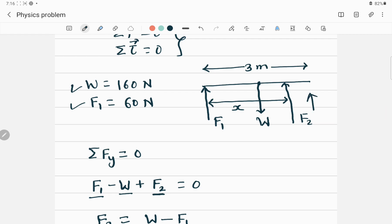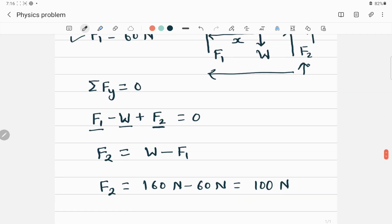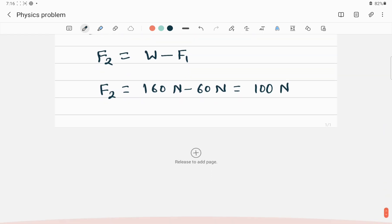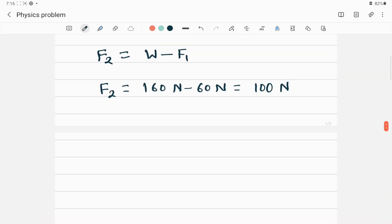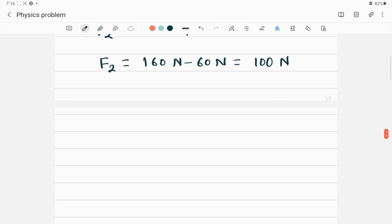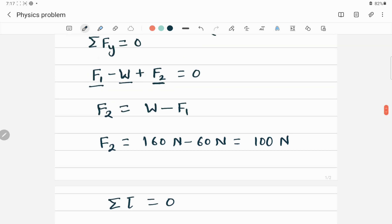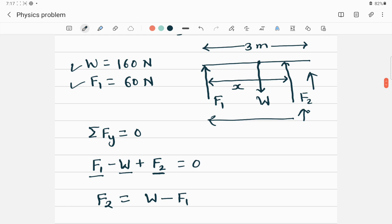So now our goal is to find how far the other person should apply this force from this point. So to find that, we have to apply second condition of equilibrium. To apply the second condition of equilibrium, so total torque should be 0. So what is torque here? If you consider the point of rotation right here...